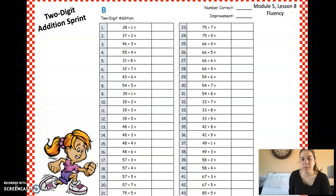Alright boys and girls here's part B. Remember your goal for part B is to get one more than you did on part A. You're still going to set your timer for two minutes and when your timer goes off your pencil goes down and your hands go up. Alright good luck.